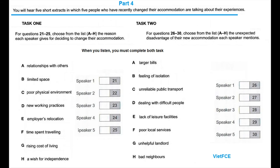That's the end of part three. Now turn to part four. Part four consists of two tasks. You'll hear five short extracts in which five people who have recently changed their accommodation are talking about their experiences. For questions 21 to 25, choose from the list A to H the reason each speaker gives for deciding to change their accommodation. For questions 26 to 30, choose from the list A to H the unexpected disadvantage of their accommodation each speaker mentions. While you listen, you must complete both tasks. In the exam, you have 45 seconds to look at part four.